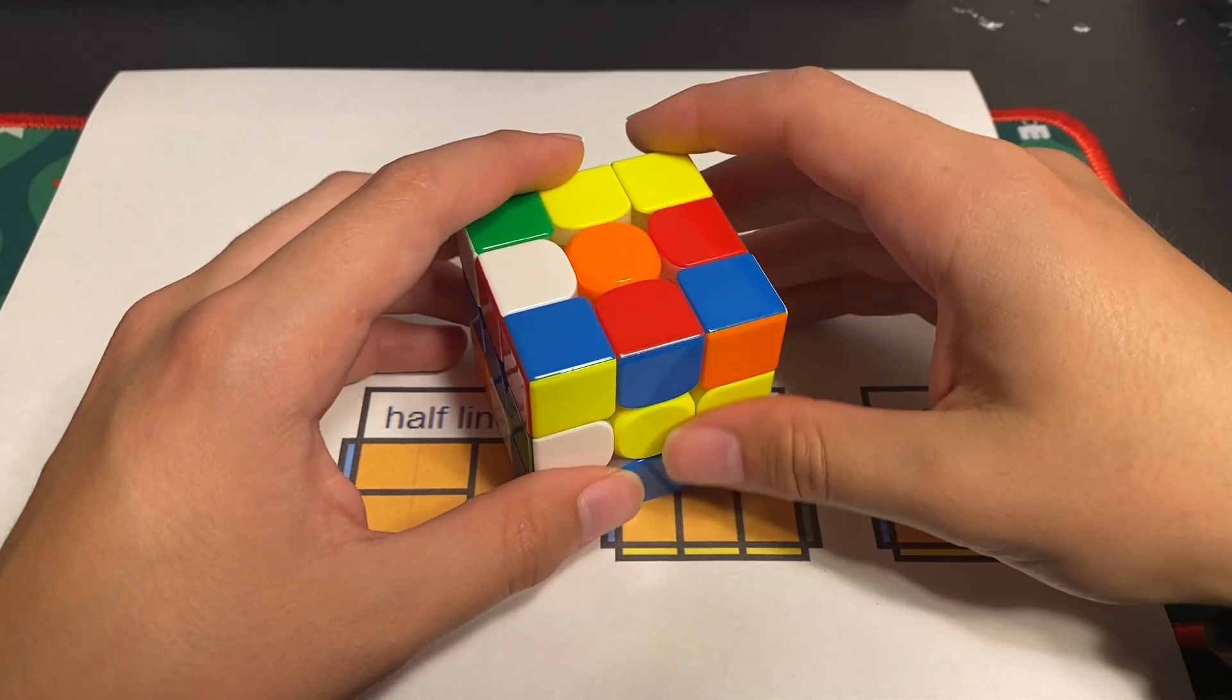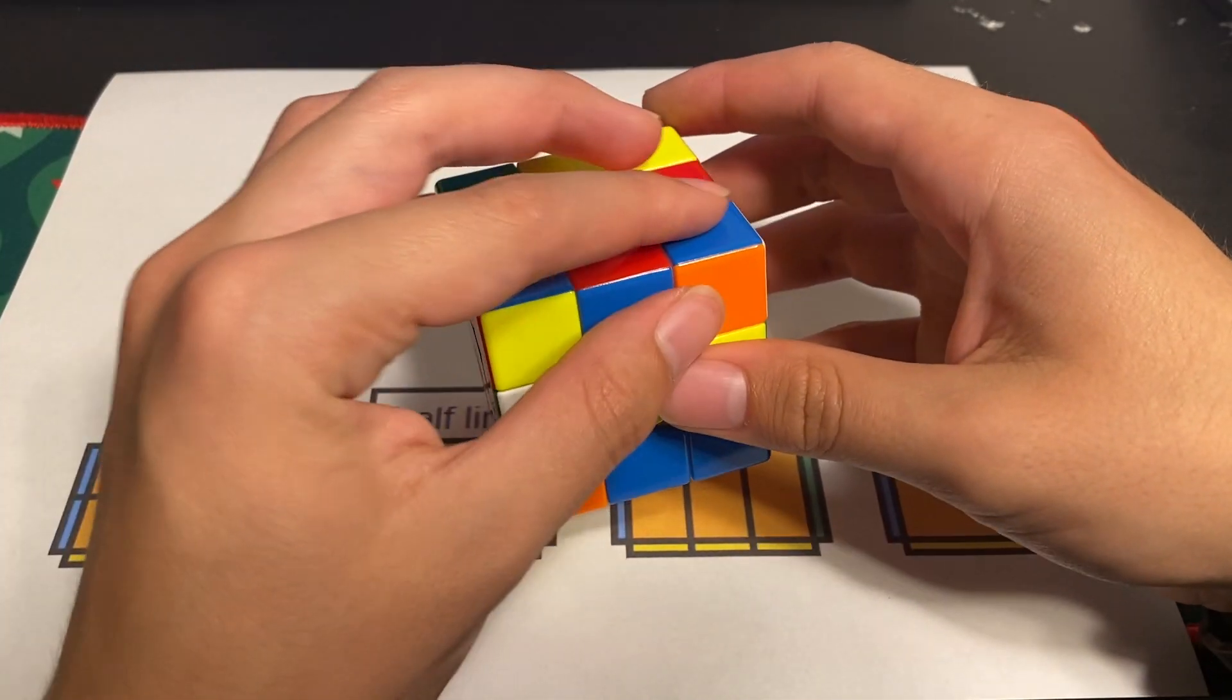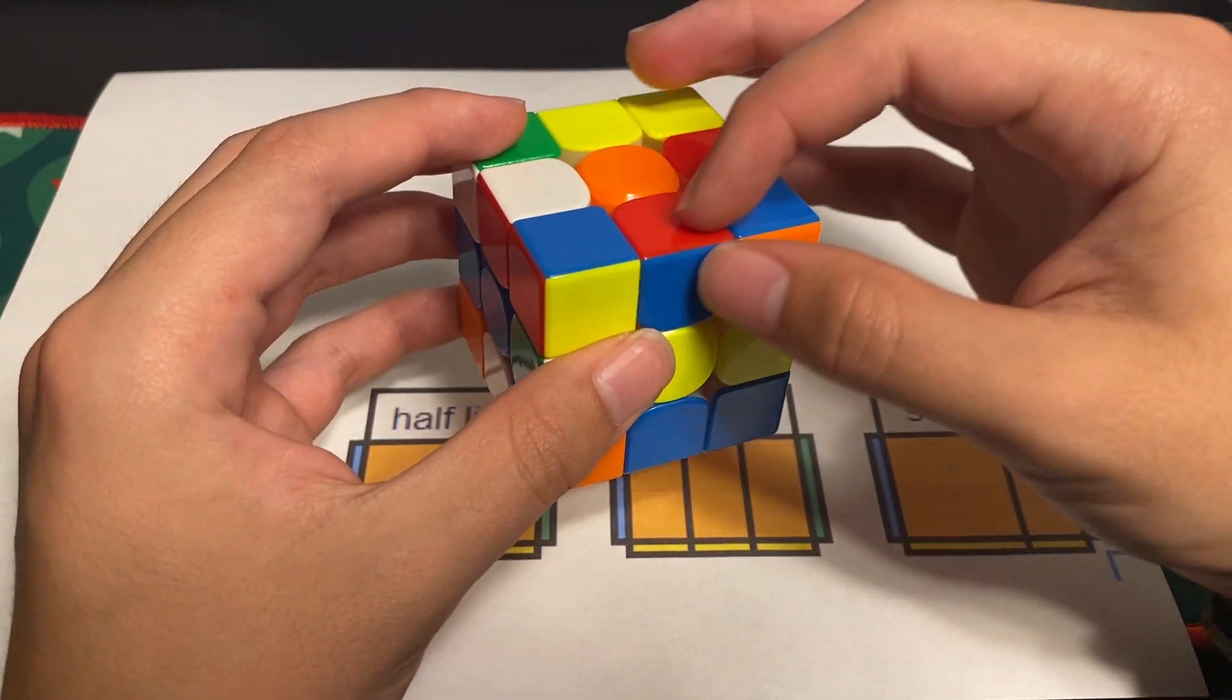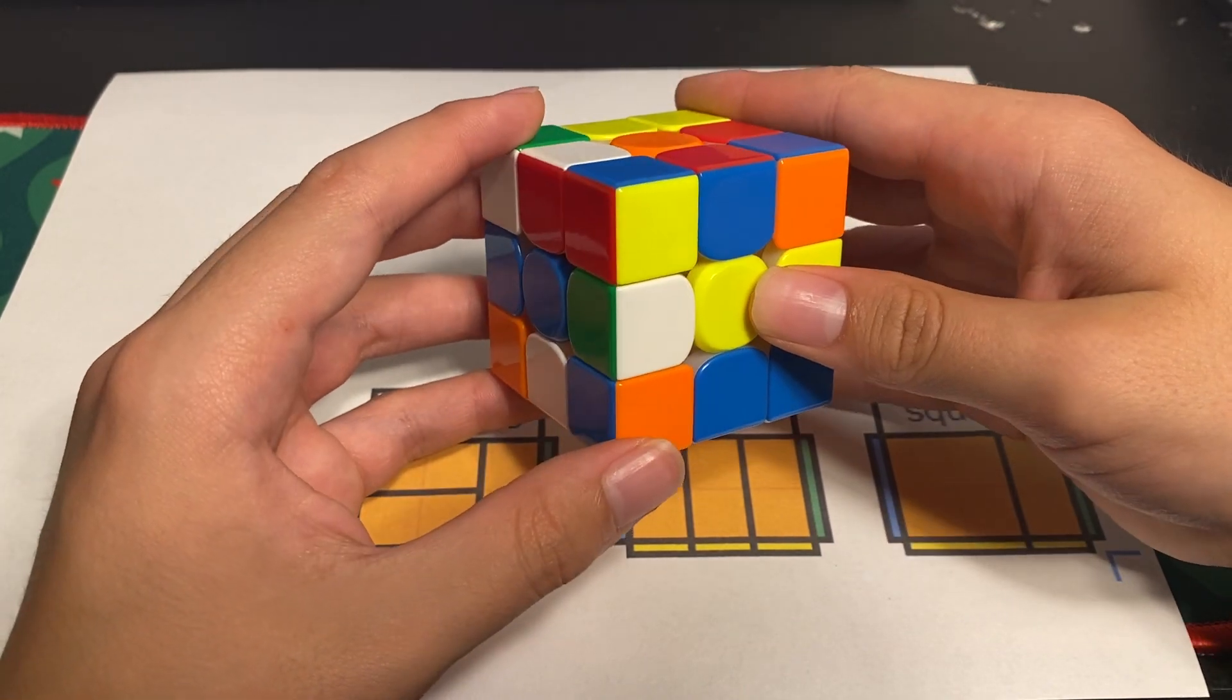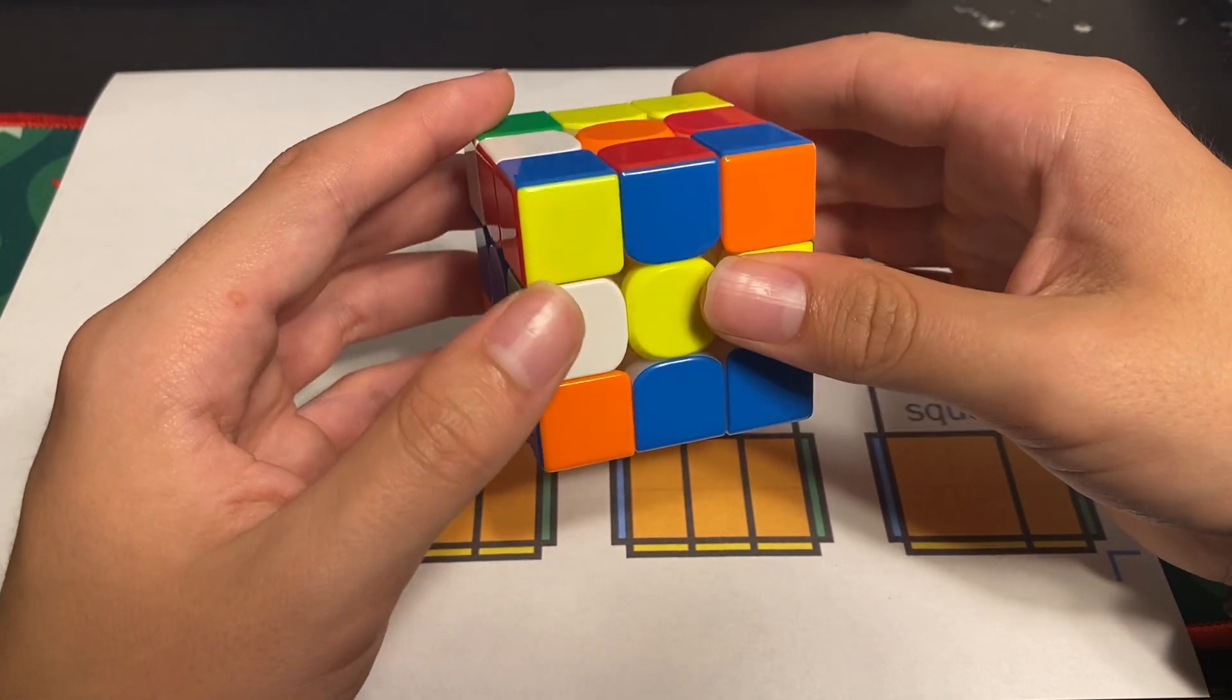So how you would spot line blocks is one way of spotting them is finding these pseudo pairs. Whenever I see a pseudo pair like this, then I immediately look to see if there's some line block.